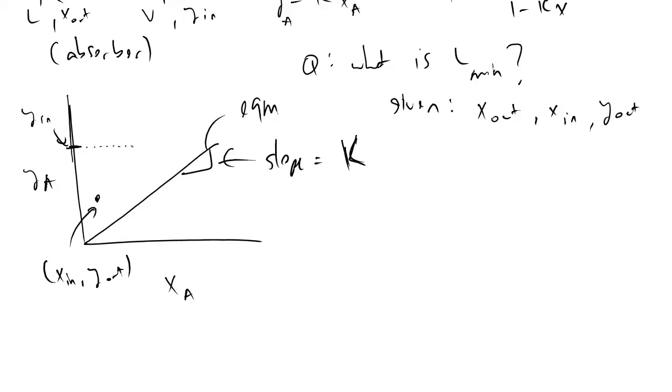And if we draw a horizontal line across, and then we let the point, if we connect this point and let it touch the equilibrium curve, and this is a straight line, the slope of this line will be equal to the minimum solvent flow rate divided by the mole rate of your carrier. And in the case of absorbers, that would be the vapor phase mole flow rate.